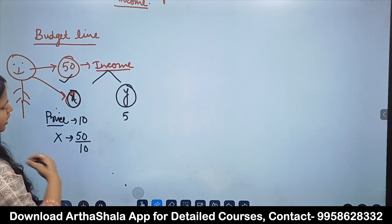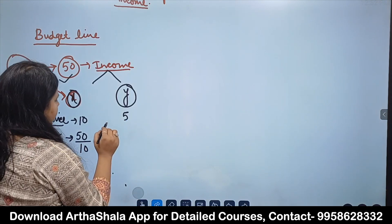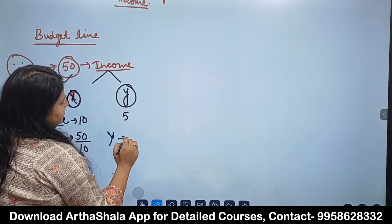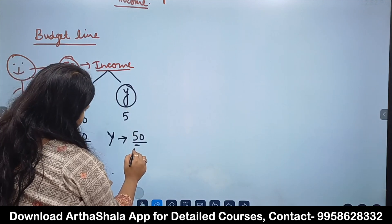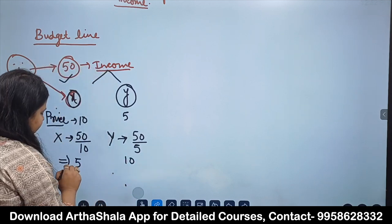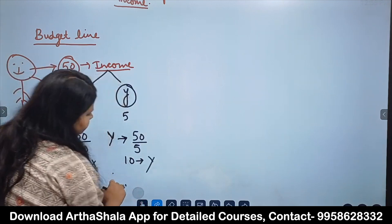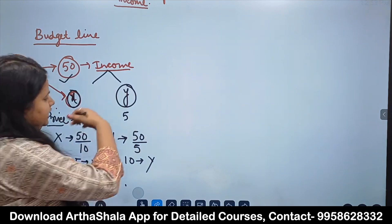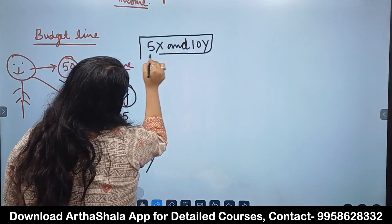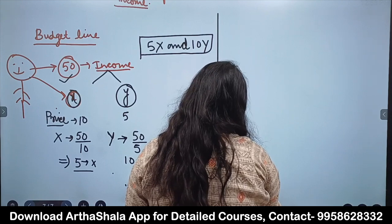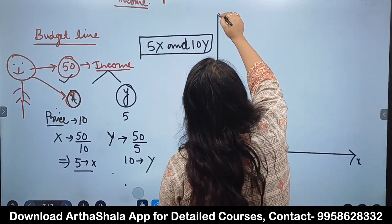If you spend all the income on X, you can buy 5 units. If you spend all the income on Y, you can buy 10 units — since income is 50 rupees and Y is 5 rupees per unit. We can draw this on a graph with Y on the vertical axis and X on the horizontal axis.